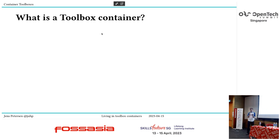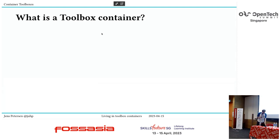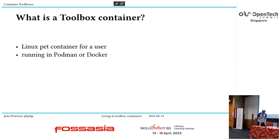Today I'll mainly be talking about two projects which I've contributed to, but I'm not the main developer — I want to say upfront that I'm not taking credit for this. So one is toolbox, another is distrobox. They're somewhat similar but they also have some slight differences, as we'll see. So what's a toolbox container? Basically it's just a so-called pet container, which means it's something that you're taking care of, that maybe is valuable to you, something you might be using for a longer period of time.